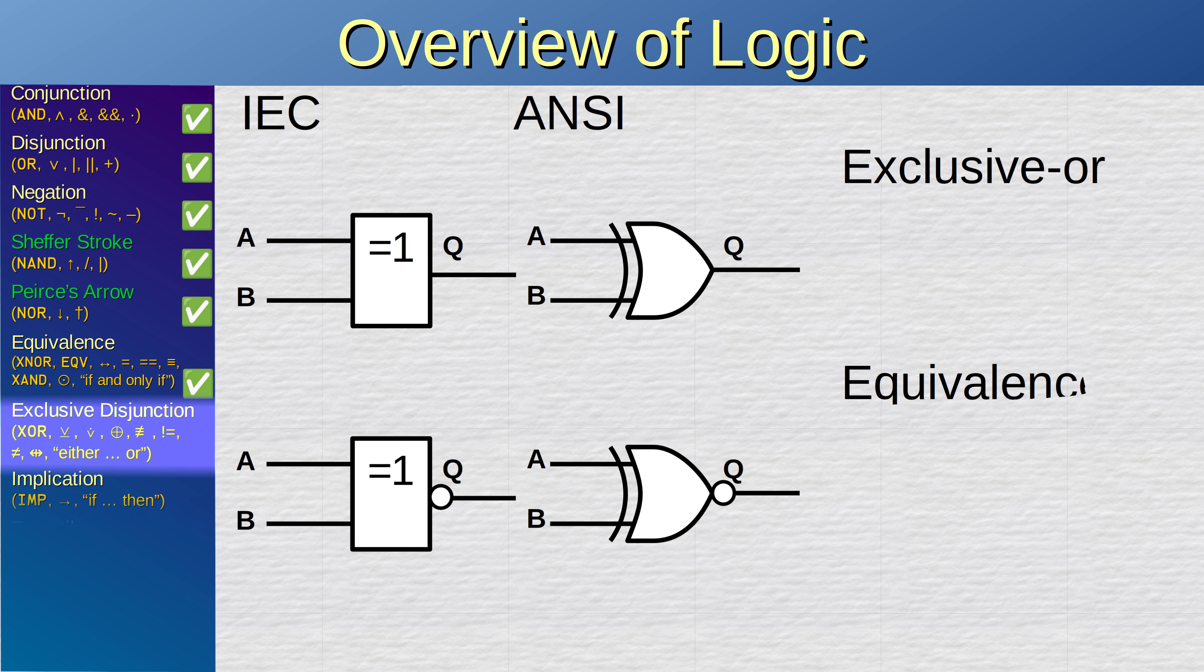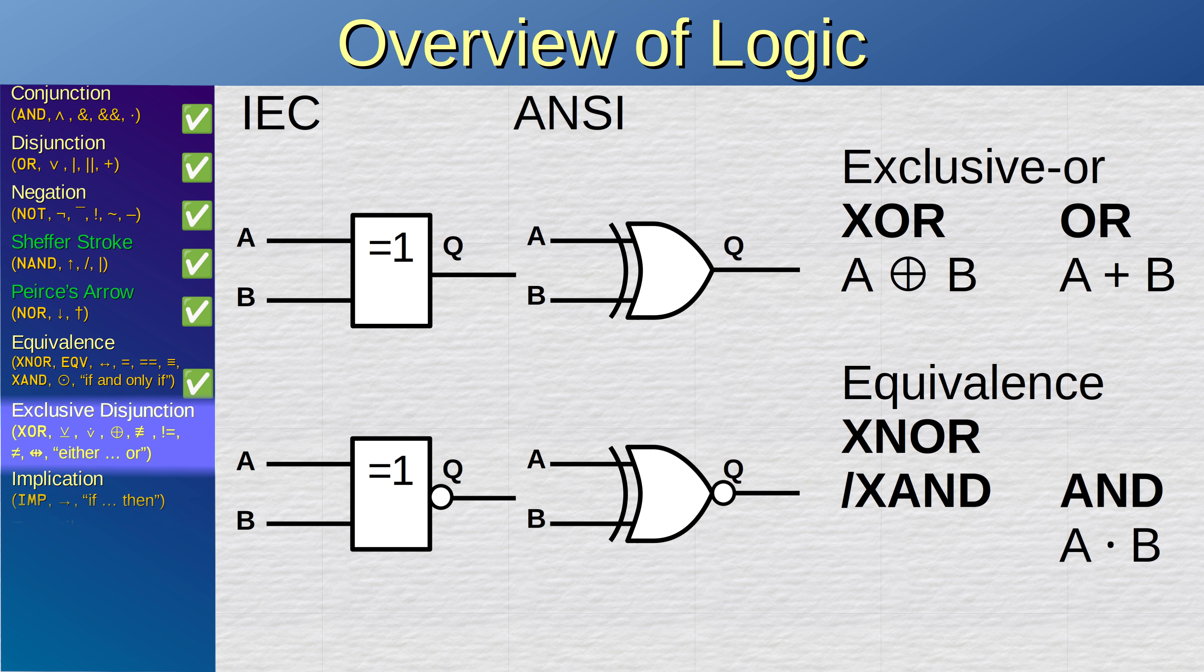The circuit symbol for the equivalence is similar, but with an inverter circle added at the end. Because these two gates are logically opposites of each other, and the exclusive disjunction is called XOR, the equivalence is sometimes called XNOR, with an N added to indicate negation. It is also sometimes called XAND, exclusive AND. This is reflected in the algebraic symbols of these two gates. The OR is a plus sign, and the AND is a multiplication dot. The exclusive OR is an encircled plus sign, and the equivalence is an encircled multiplication dot, because in a way it is an exclusive AND.